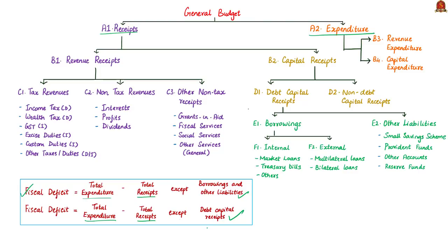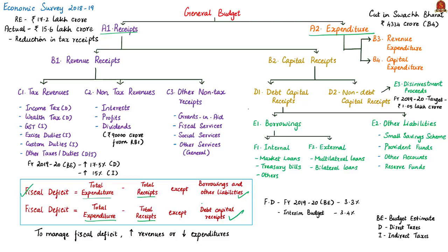To manage fiscal deficit, the government can either increase its revenues or decrease its expenditure. The news article states that the government is estimating a fiscal deficit of 3.3% of GDP in the financial year 2019-20. If you see the interim budget presented in Parliament in February, it gave an estimate of fiscal deficit at 3.4%. Interim budgets are generally presented when elections are about to happen in the particular financial year, but they are similar to the general budget.